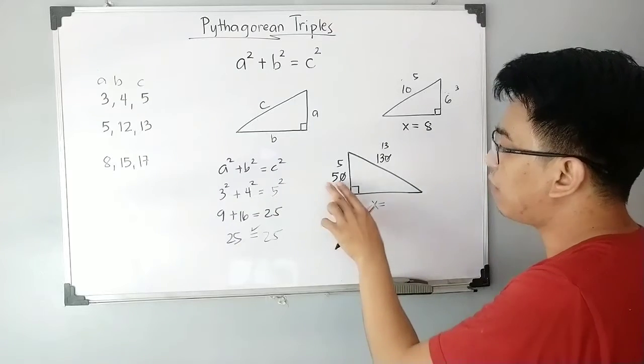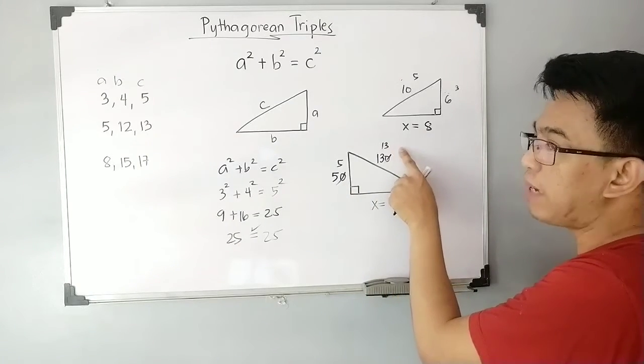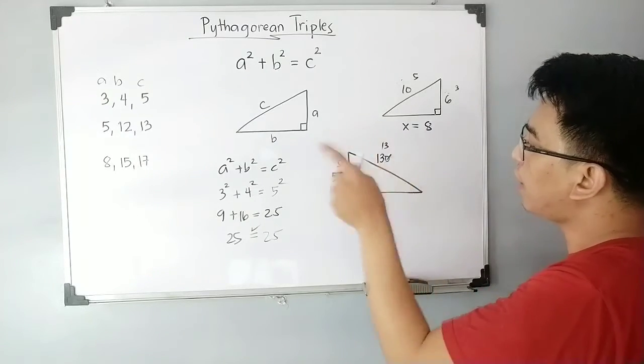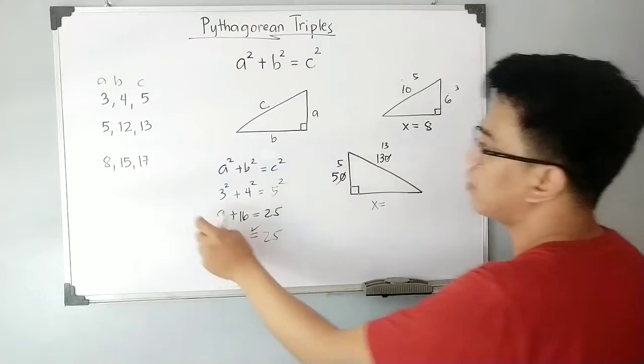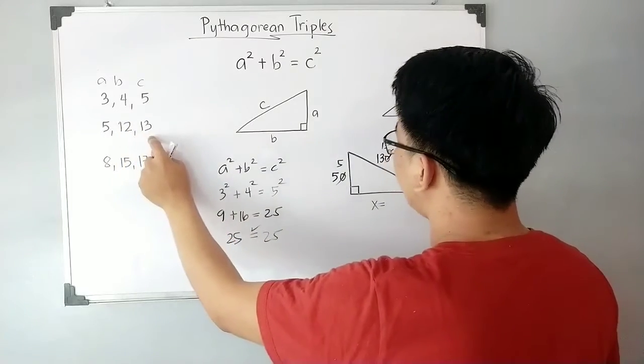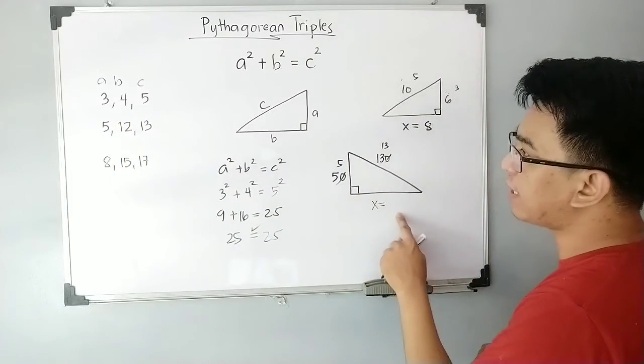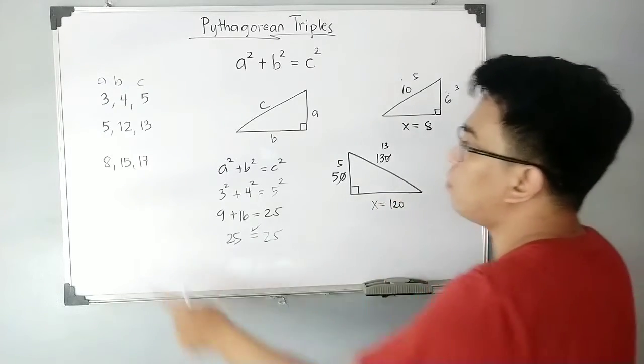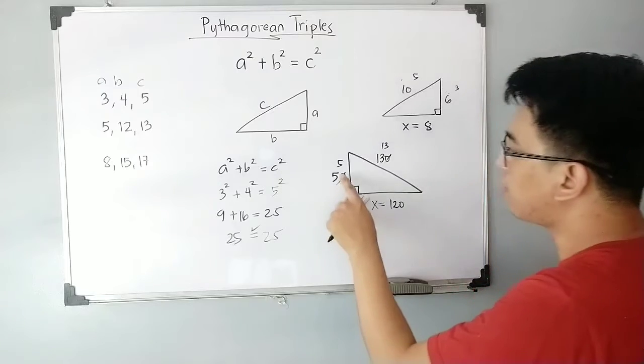So the pattern is 5-12-13. The missing side here, or the length of this side, is 120. How? Simply multiply 12 by 10, so you can make this a Pythagorean triple.